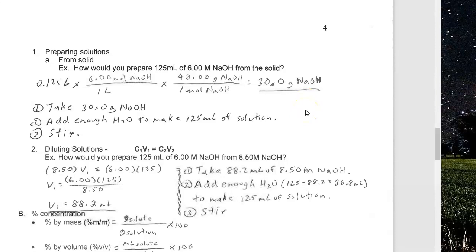That's the calculation, but the question asks how to prepare it. You go to the scale, weigh out 30.0 grams of sodium hydroxide, and then add enough water to make 125 milliliters of solution. Molarity is moles per liter of solution — not liters of solvent — but it's going to be 125 milliliters anyway. The sodium hydroxide doesn't really take up space, so add 125 milliliters of water, stir well, pour into a bottle, slap a label on it — it's ready for lab.